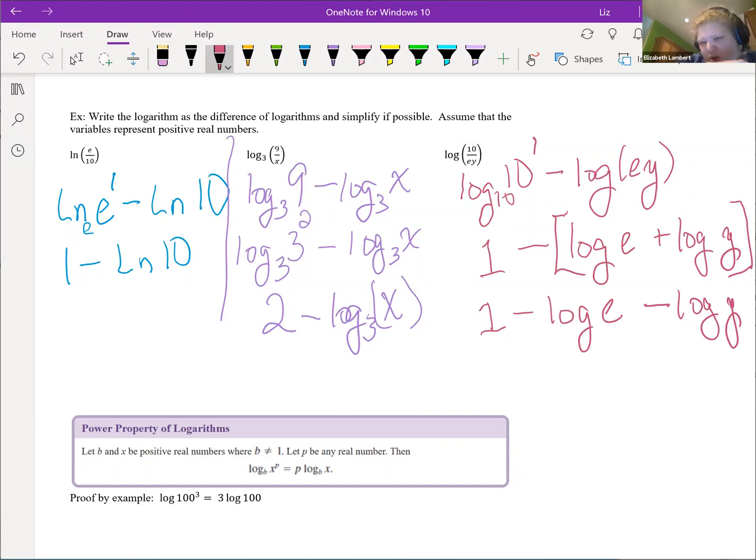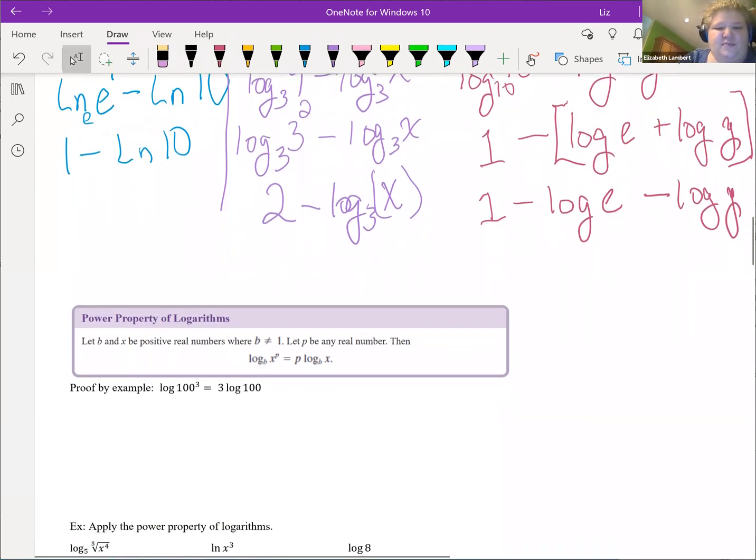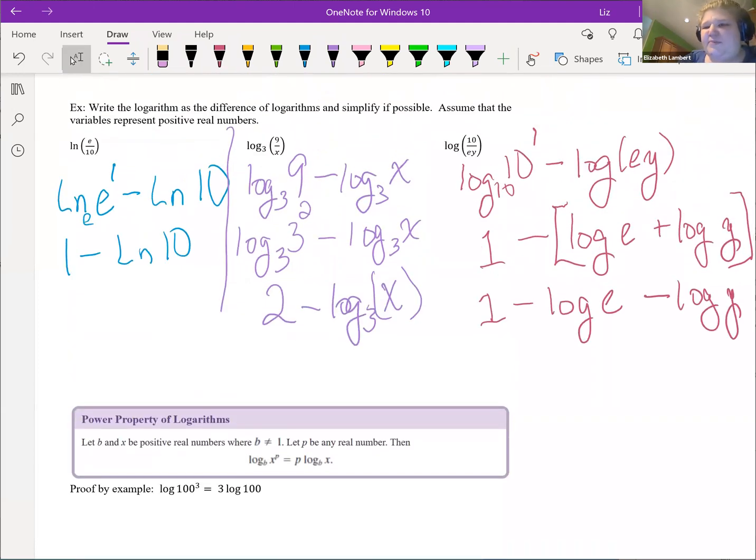So we're going to have problems where you get a whole ugly mess and you just have to use all the log properties to break it all out and expand it. And then after we get real comfy doing that and expanding everything and making them really really long, we're going to turn everything around and do it backwards and shove it all back together, because there are times when that is beneficial. All right, so we'll stop that one there.